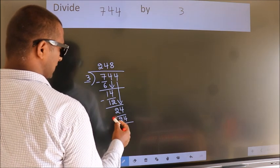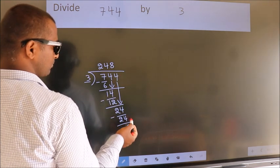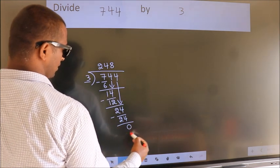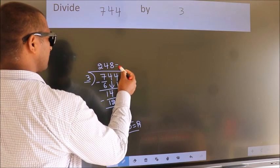Now, we subtract. We get 0. No more numbers to bring it down. So, we stop here. This is our remainder. This is our quotient.